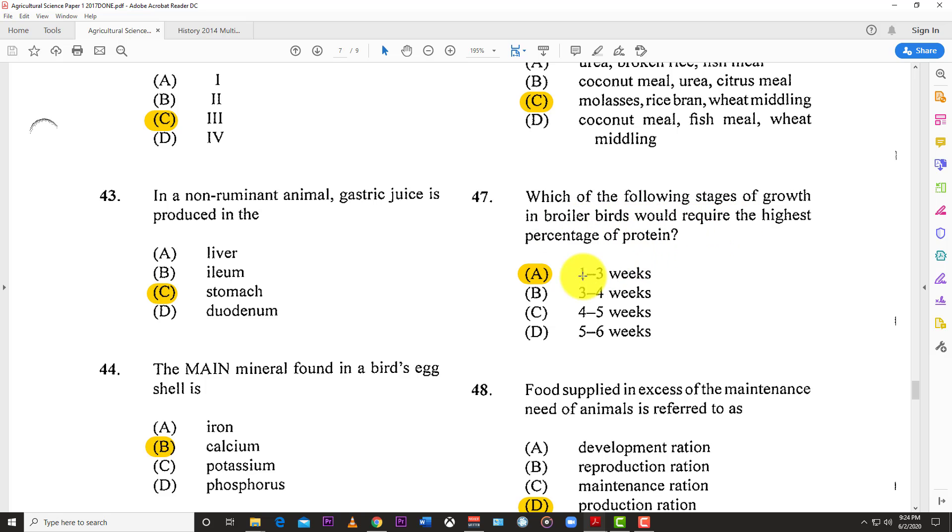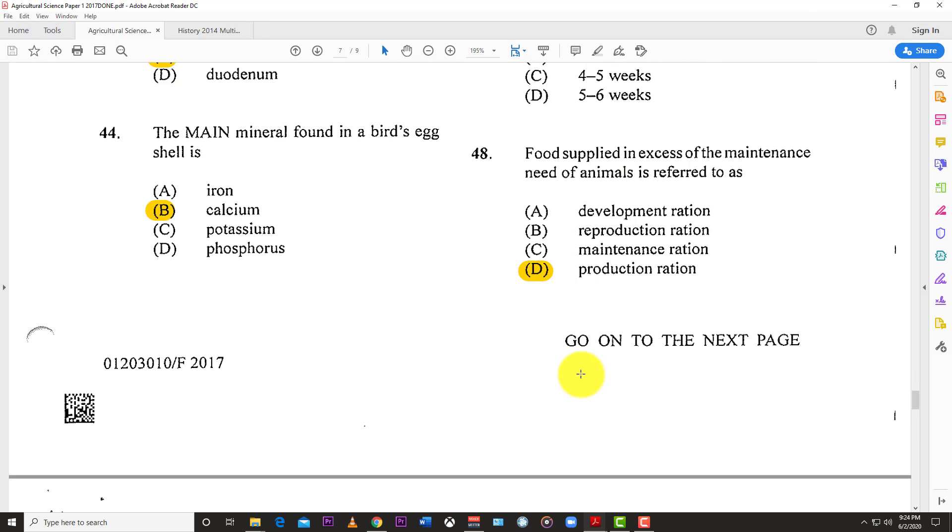Number forty-six: Rations designed primarily for energy would mostly contain C, molasses, rice bran, wheat, and melon. This is simply saying these create sugar and are filled with carbs, and carbs are the main source of energy in animal rations.